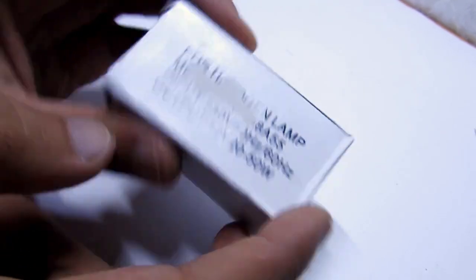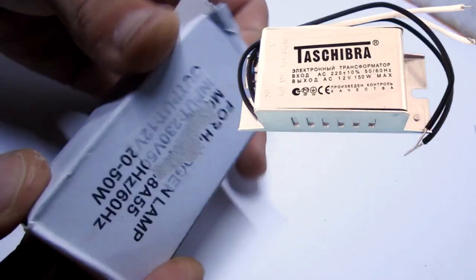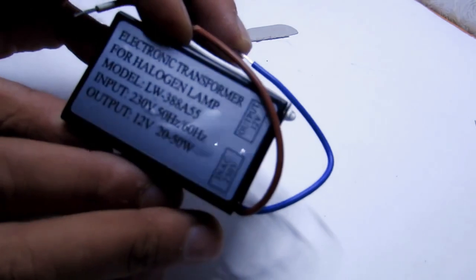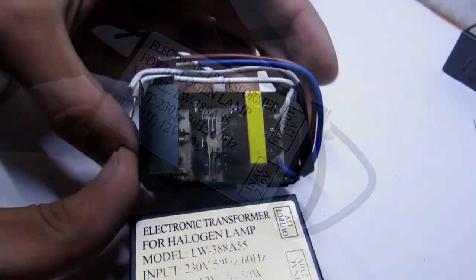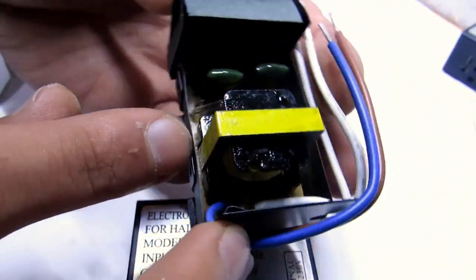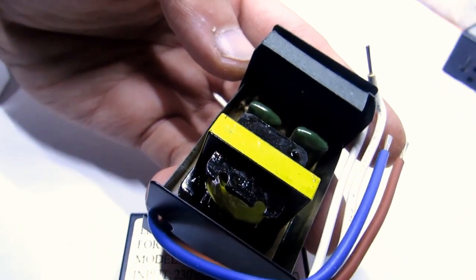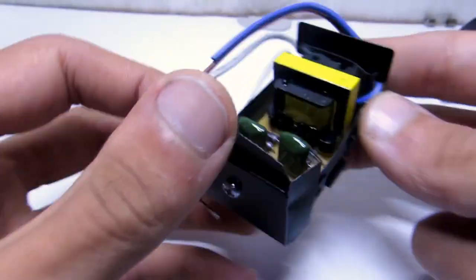First, we take an electronic transformer, for example type Toshiba, approximately 50 to 60 watt. Remove the board from the housing and desolder the pulse transformer. The wires are also useful for the future. Remove the fixing insulation.